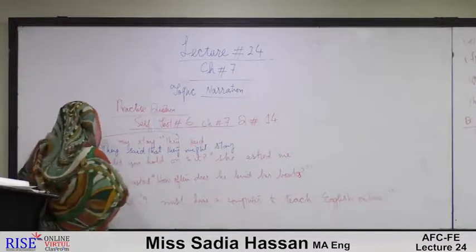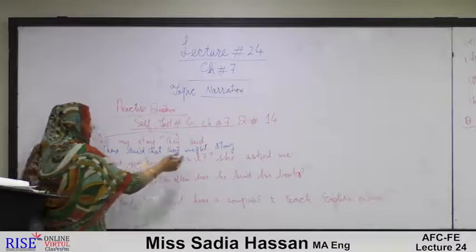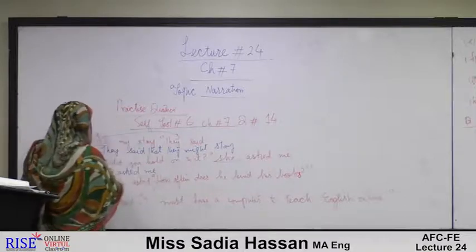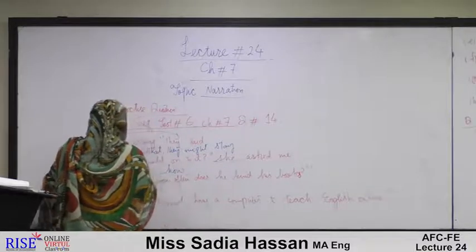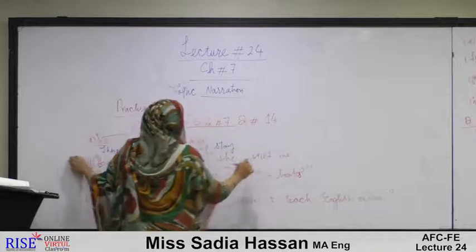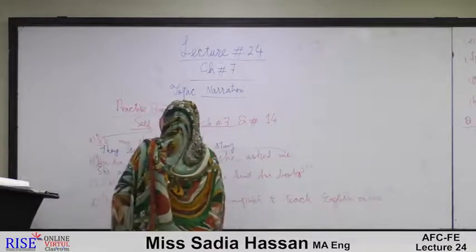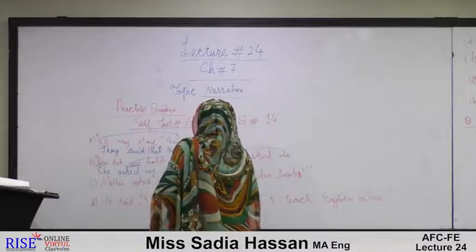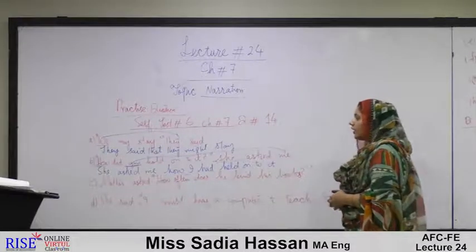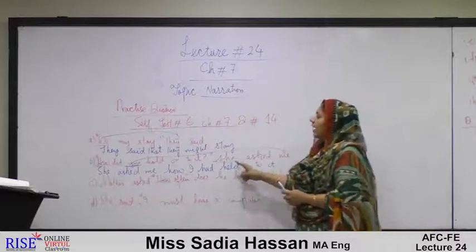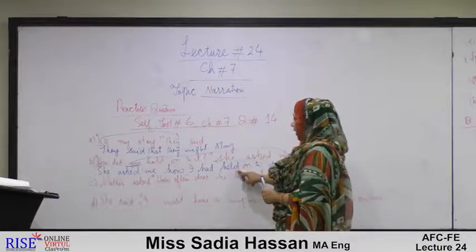Sentence b: 'How did you hold on to it?' she asked me. Changed to: she asked me how I had held on to it. 'How' remains unchanged as part of the wh-family. 'You' as second person changes according to object 'me' — reversed to 'I.' Simple past 'did hold' changes to past perfect: 'did' becomes 'had' and 'hold' becomes 'held' (third verb form).